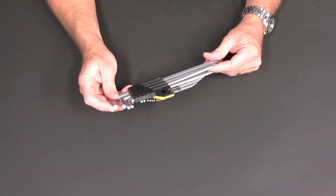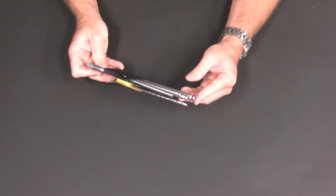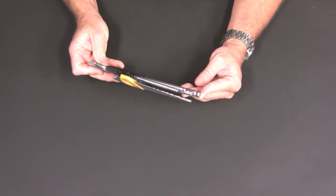They have chamfered ends on the short side for easy insertion and ball ends on the long side that allow for a 30 degree working angle.